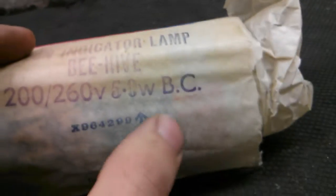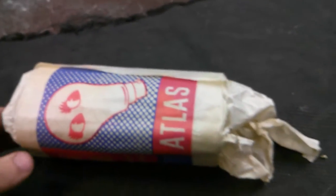Neon indicator lamp, the beehive style. 200 to 260 volts, 5 watts bayonet connection and looking at this mark here, that looks like XMOD but I could be wrong. But yeah, pretty cool old school packaging. It is new old stock.